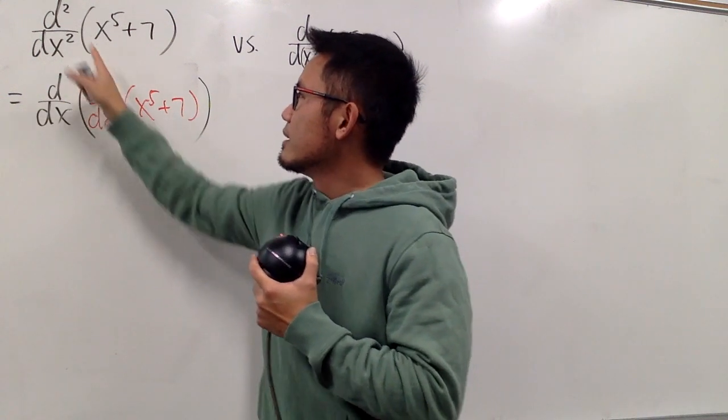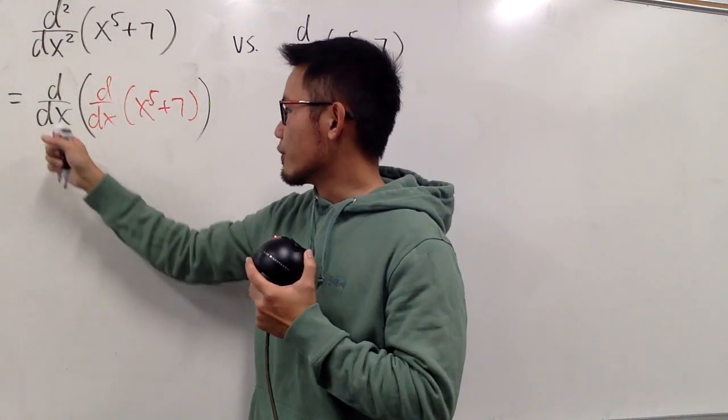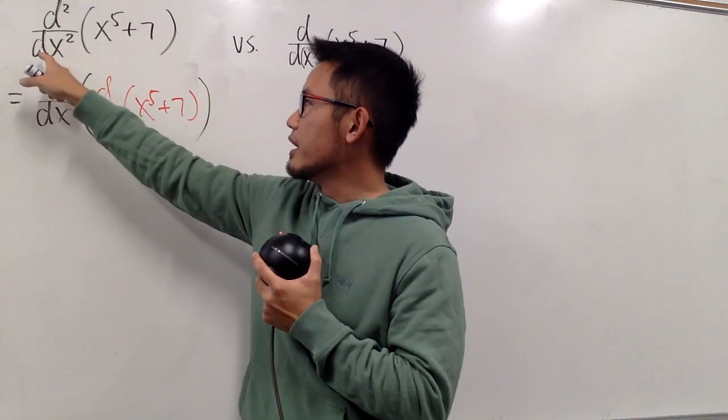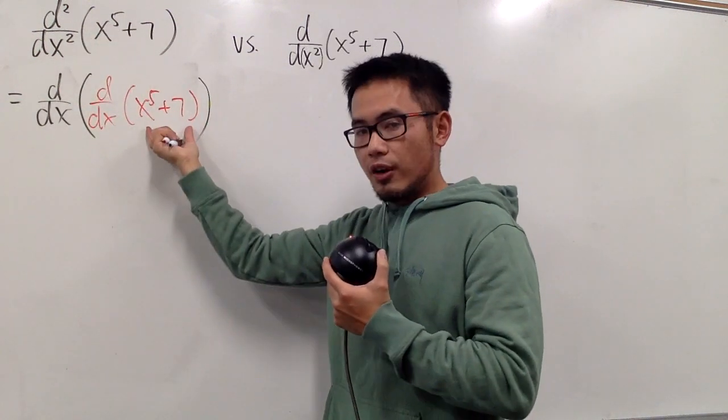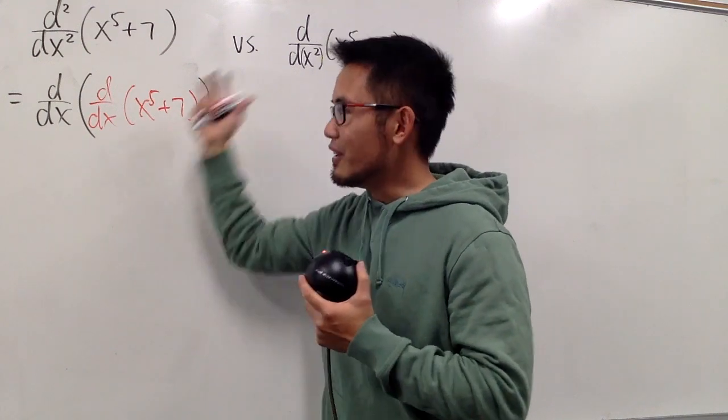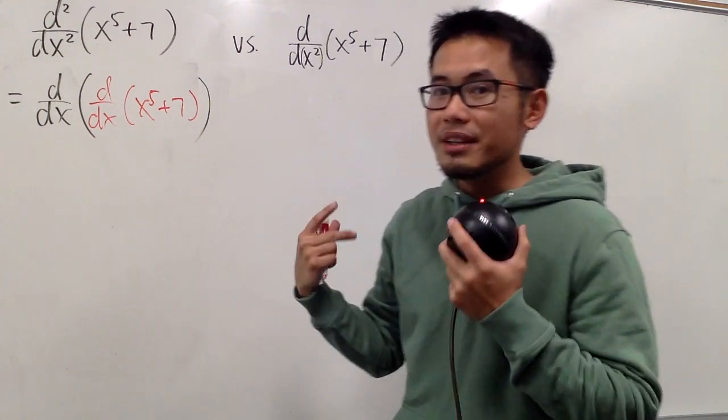You see, d times d, that's how we get d squared, and we have dx times dx, that's how we get dx². So we differentiate this first, look at the result, differentiate it again, that's how we get the second derivative.